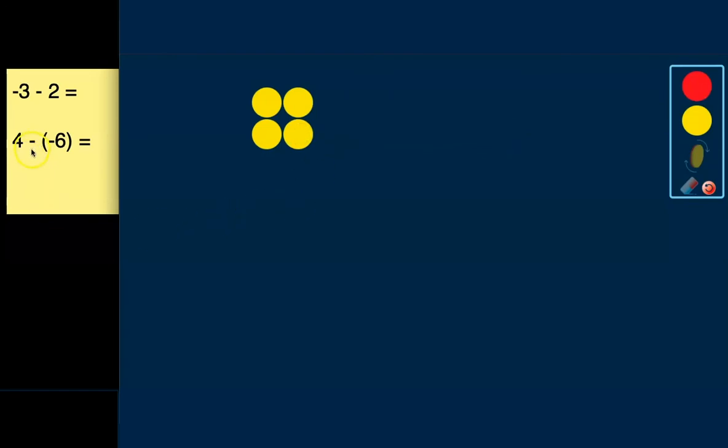Now the problem is asking us to subtract negative 6. But if you look at our counters, we don't have any negative counters. So we need to use our zero pairs to help us. So we'll take a positive 1 and a negative 1. There's a zero pair. And our goal is to try to get 6 of these negative counters. So we need 6 red ones. Positive 1 and a negative 1. There's a zero pair. Positive 1 and a negative 1. Now we're up to 3. We need to get to 6. A positive 1 and a negative 1. There is a zero pair.